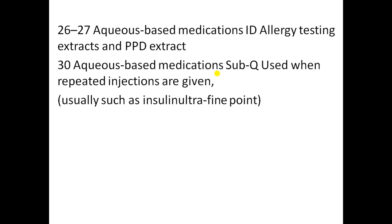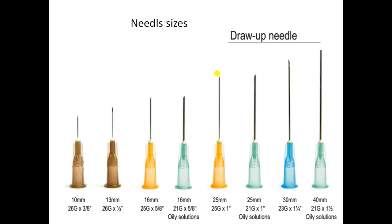Gauges 26–27 are used for intradermal allergy testing extract and PPD extract. Gauge 30 aqueous-based subcutaneous medications are used when repeated injections are given, such as insulin, using ultra-fine point needles. Needle sizes include 26-gauge 10 mm, 25-gauge, 21-gauge 40 mm for oily solutions, and others with different color-coded hubs.